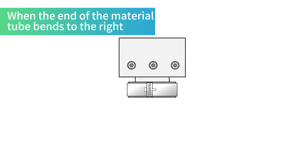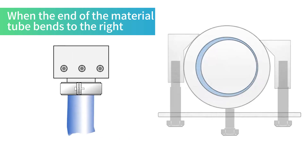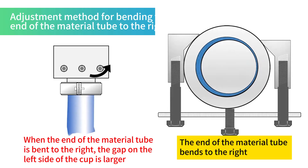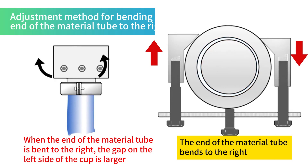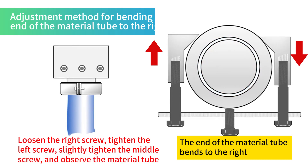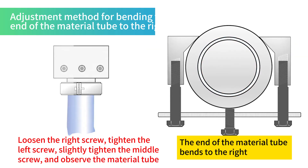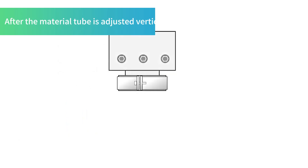When the end of the material tube bends to the right, the gap on the left side of the cup is larger. After the material tube is adjusted vertically, the gap becomes consistent.